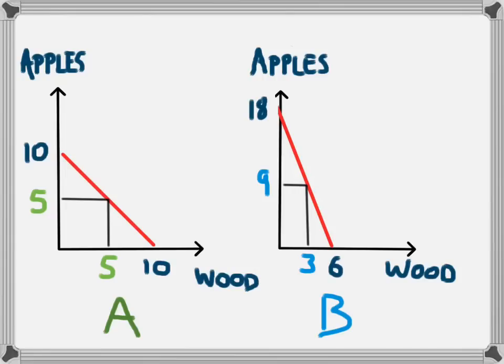Gains from trade occur when countries specialize in the production of the good in which they have a comparative advantage. In this case, the comparative advantage for Country A would mean producing 10 units of wood, and for Country B it would mean specializing in apples — the thing in which they have a comparative advantage. Doing this alone is not a good idea because Country A would have no food and Country B would have no shelter, but because they've produced the product in which they have a comparative advantage they'll now be able to trade and both countries can benefit.